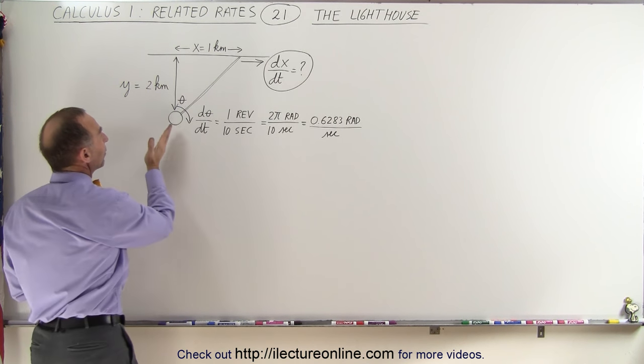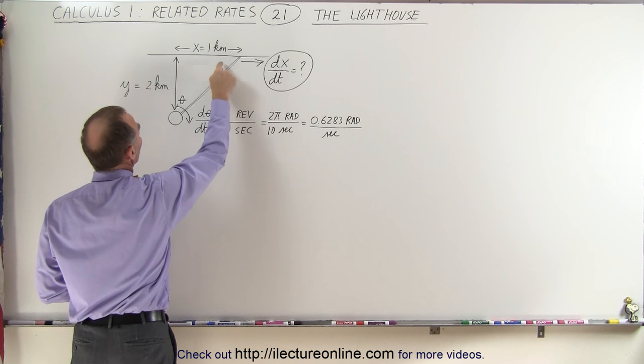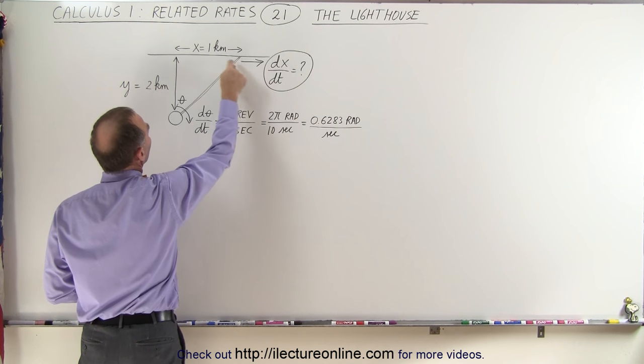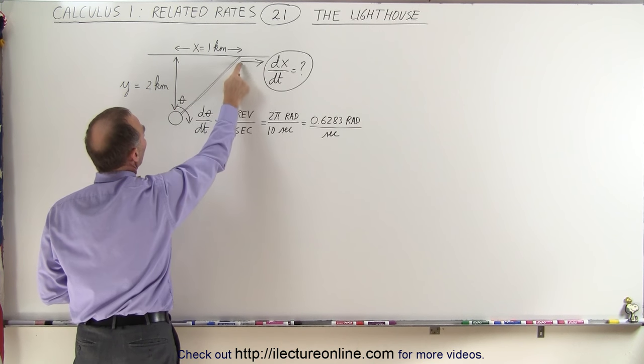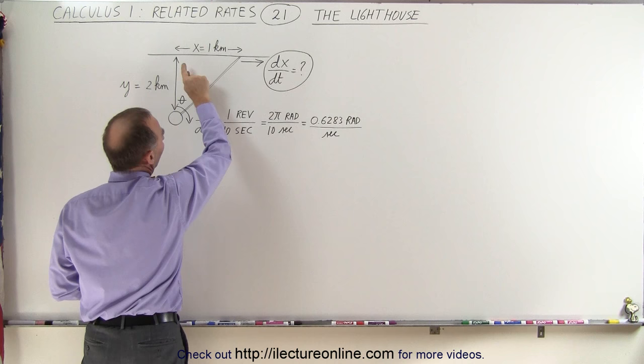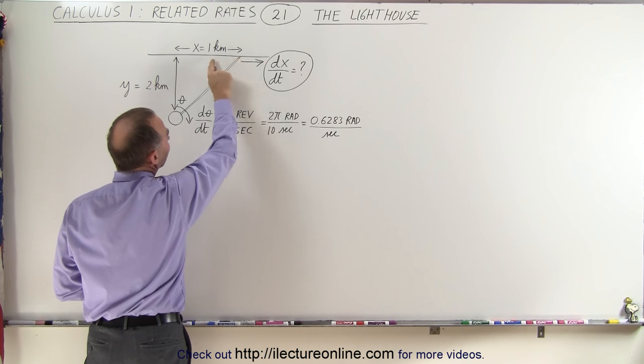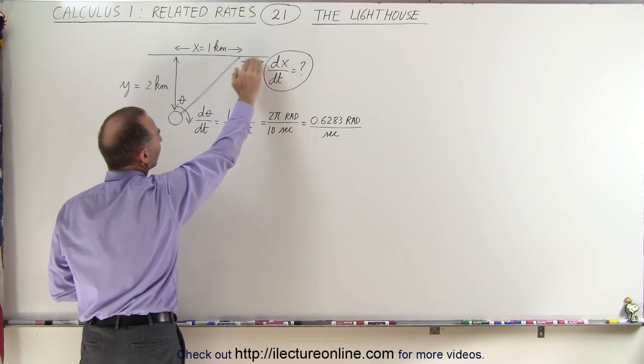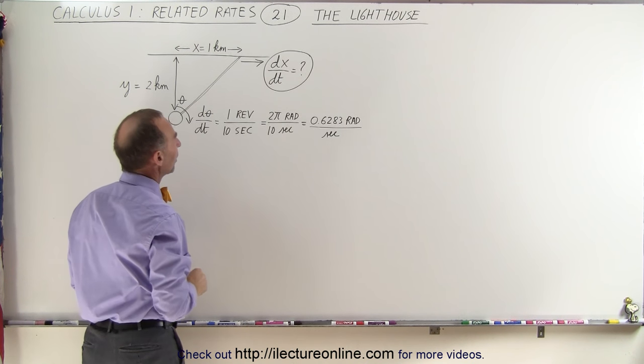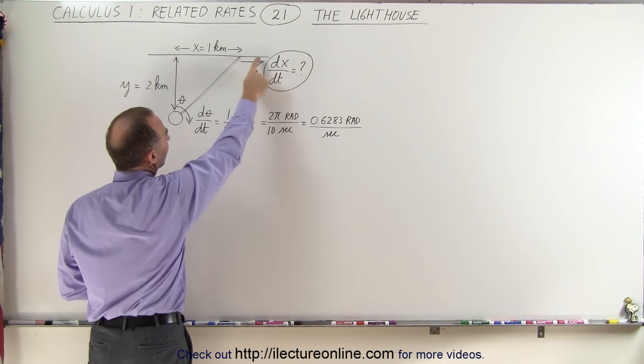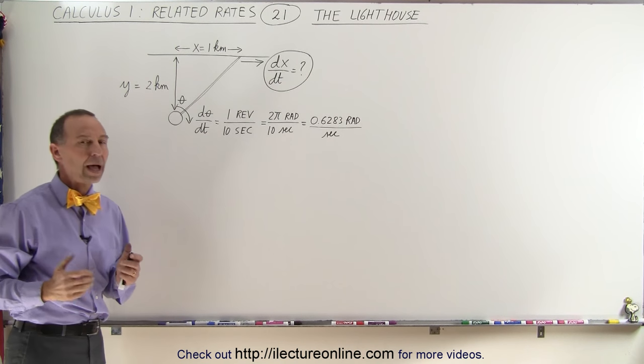When the beam is pointing at a particular angle such that it strikes the shoreline one kilometer away from the point directly across from the lighthouse, we want to know what the rate of change of the position of the beam will be against the shoreline as it's moving to the right as the beam is rotating. How fast is the beam moving along the shoreline? How do we find that?